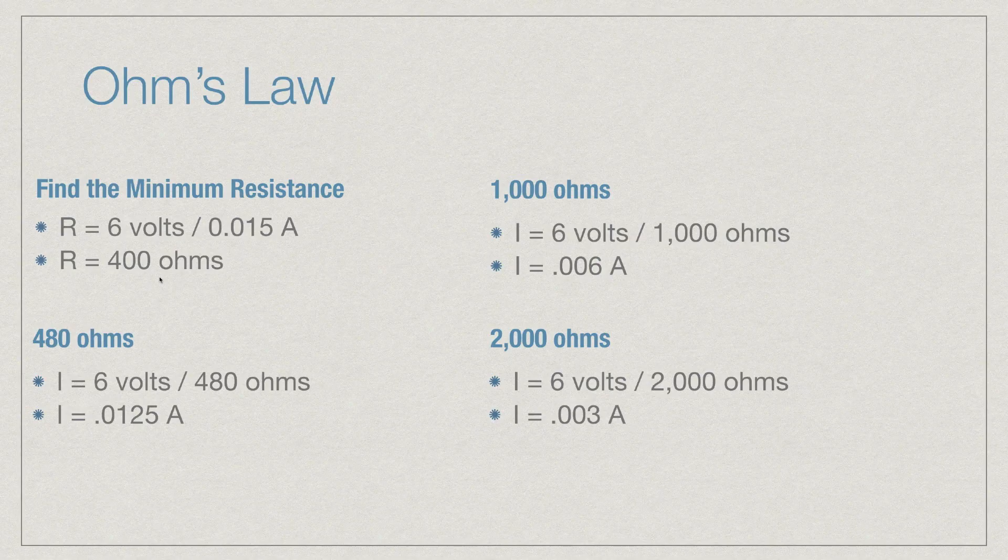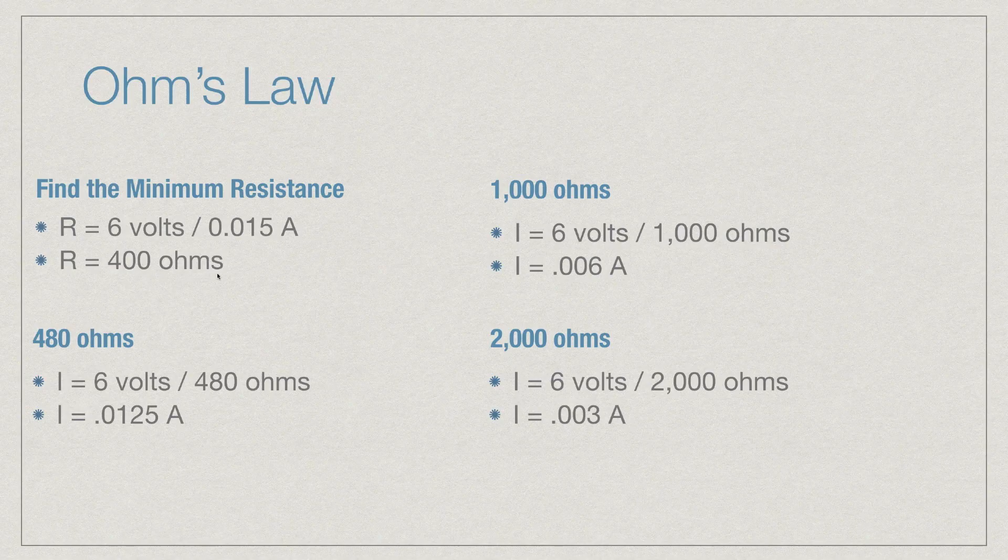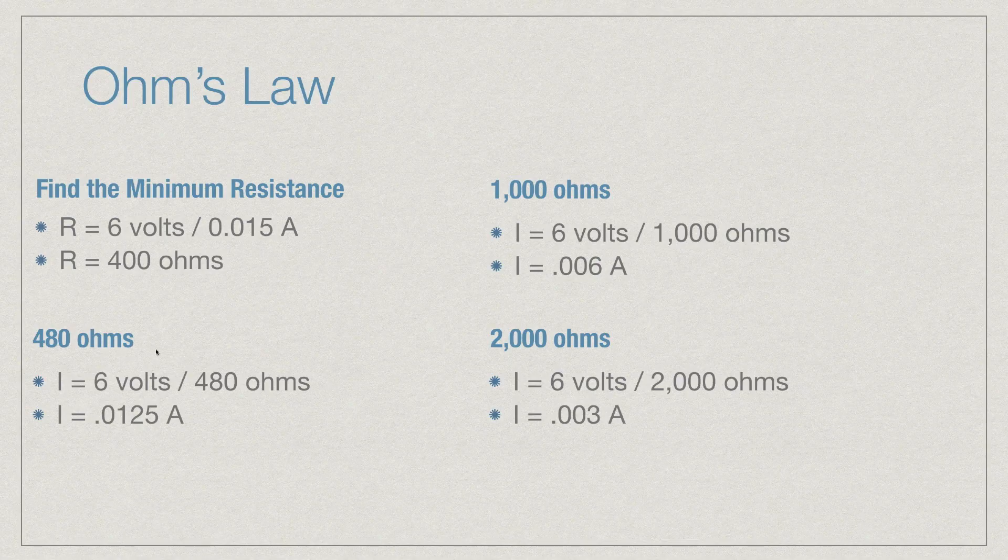So that means if I want to protect my LED, which I am assuming can't receive more than 15 milliamps or 0.015 amperes of current, I want to use a resistor that has 400 or more ohms in it. And as you saw in the video previously, I went and used a 480 ohms resistor, and you can see the results here, a 1000 and a 2000. And as you also saw, the higher the resistance, the less bright the LED lit.